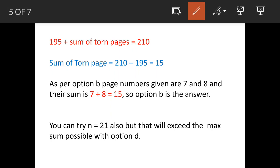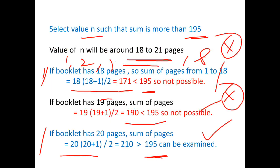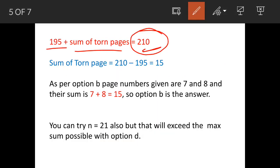Now we know that 195 plus sum of torn pages can be equated to 210 because we have assumed that there are total 20 pages in the book and they are numbered from 1, 2, 3, 4 to 20 and when you add these numbers, we get sum as 210. Because before this when 19 was put up, the sum was coming to 190. So we have ignored 19 and we are now working with 20 pages. So the sum of torn pages will be 210 minus 195, so we arrive to figure of 15.